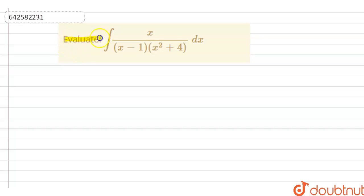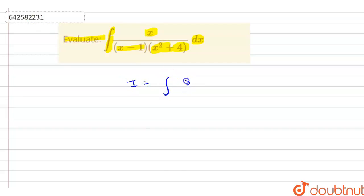The question is: evaluate the integration of x divided by (x minus 1) into (x squared plus 4) dx. So let our I be equal to the integration of x by (x minus 1)(x squared plus 4) dx.